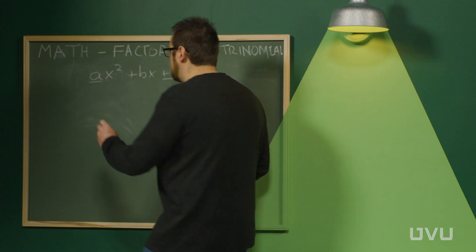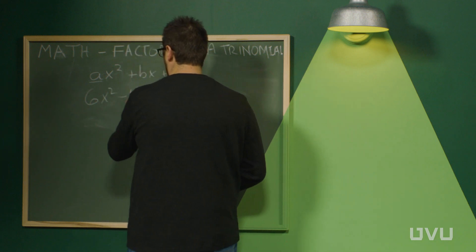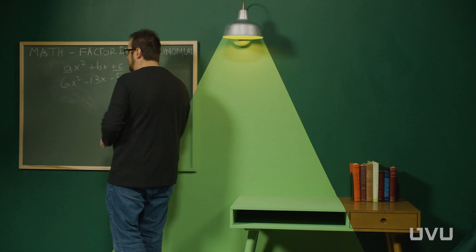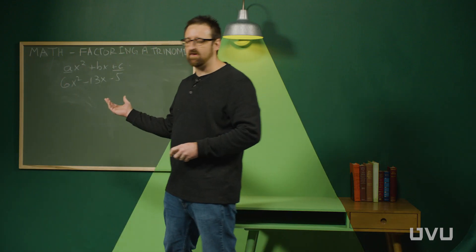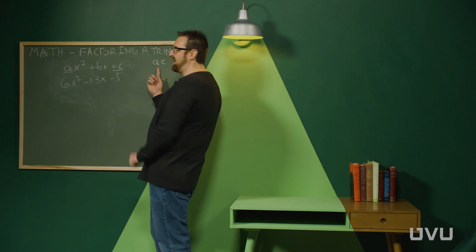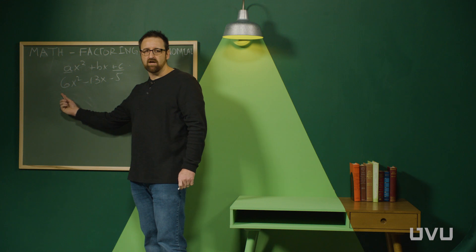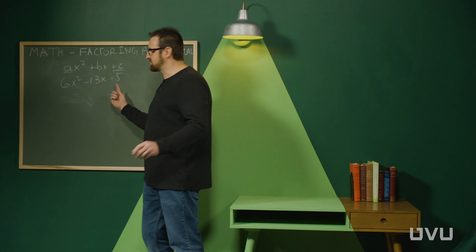So let's do this with an example. If I want to factor this trinomial here, 6x squared minus 13x minus 5, what I'm going to do is I'm going to create an AC here by taking the product of the coefficient in front and the coefficient at the end, including their signs.